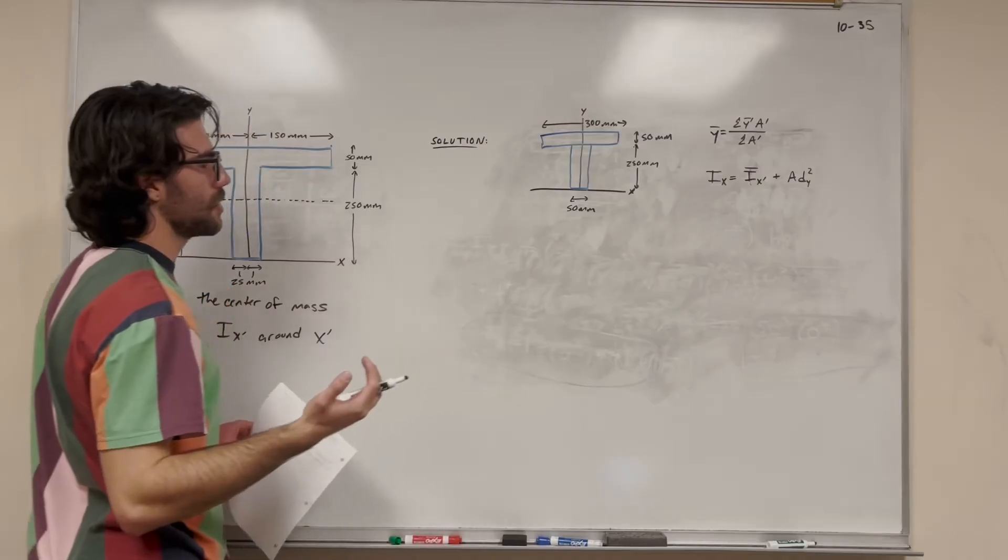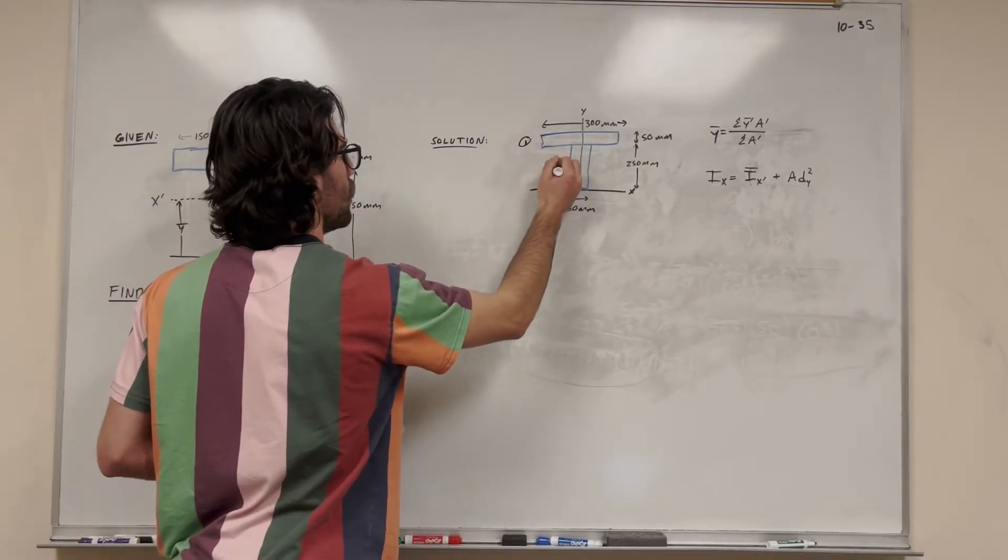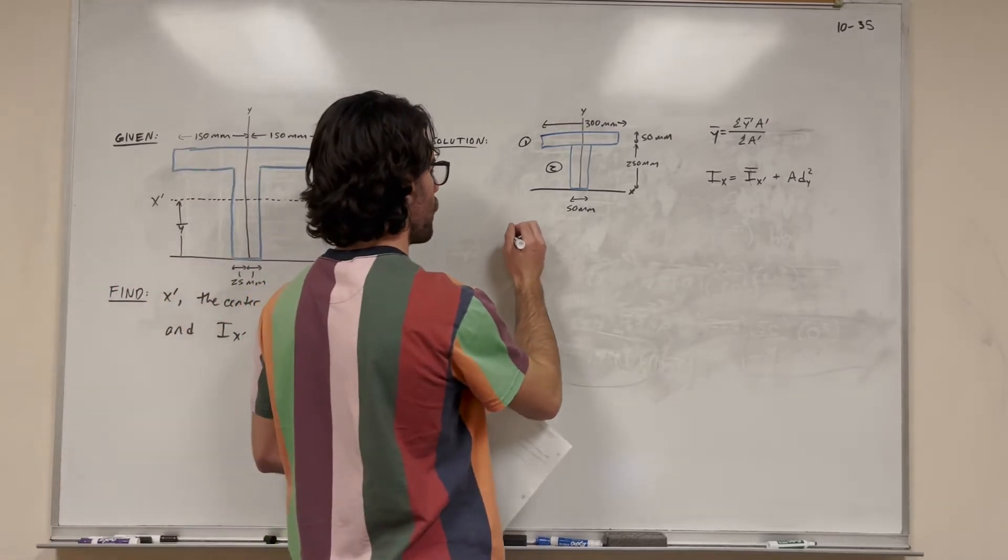So this is two rectangles, one stacked on top of each other, so I'll label that one, and label that two, so those are our two shapes. So let's find the y bar by doing our equation.